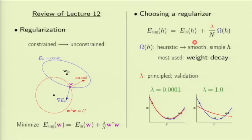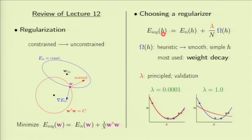We then went to the general form of a regularizer, called capital Omega of H. It depends on the small h rather than capital H — the other capital Omega used in the VC analysis. In that case, we formed the augmented error as the in-sample error plus this term. The idea is that the augmented error is a better thing to minimize if you want to minimize the out-of-sample error rather than just minimizing E-in by itself.